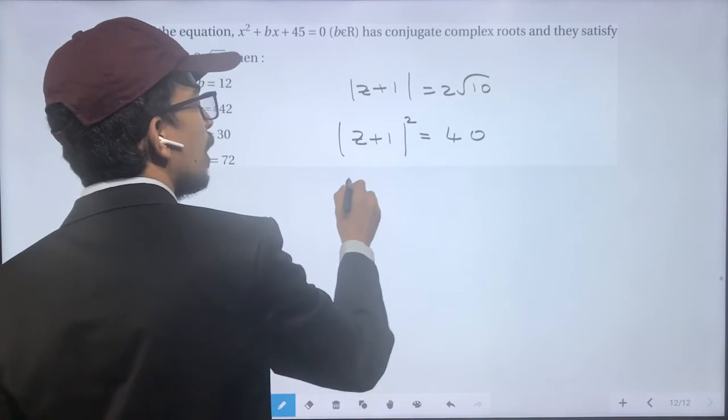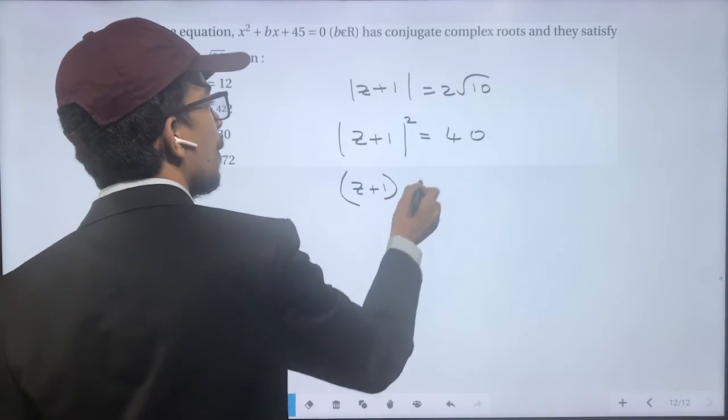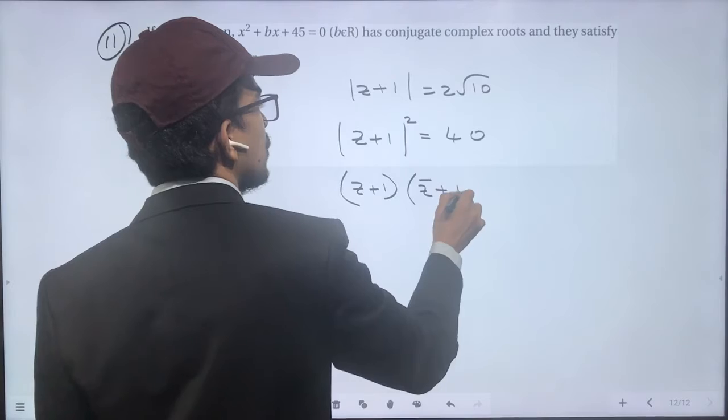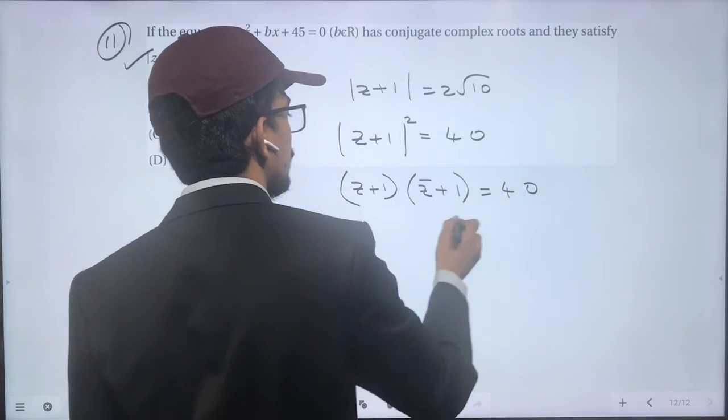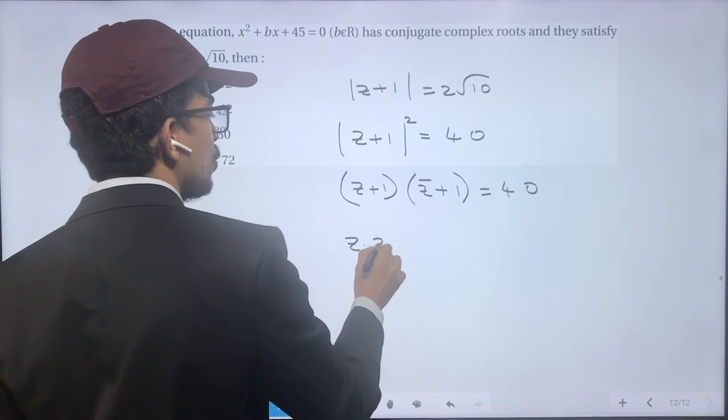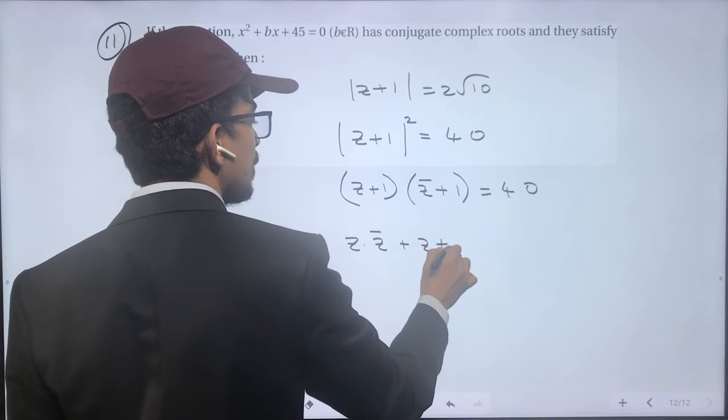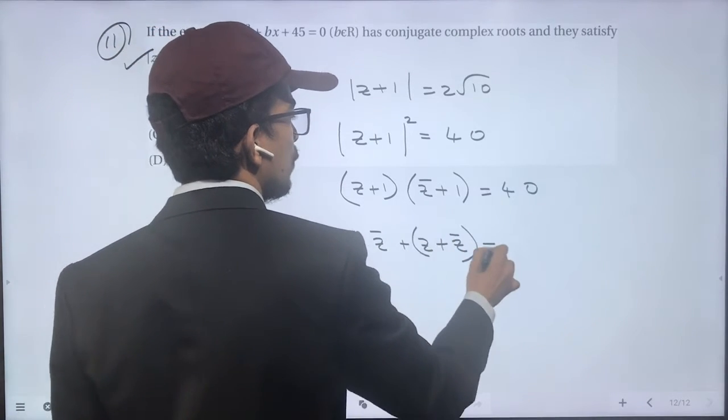(z + 1)(z̄ + 1) = 40. Expanding, we get z·z̄ + z + z̄ + 1 = 40.